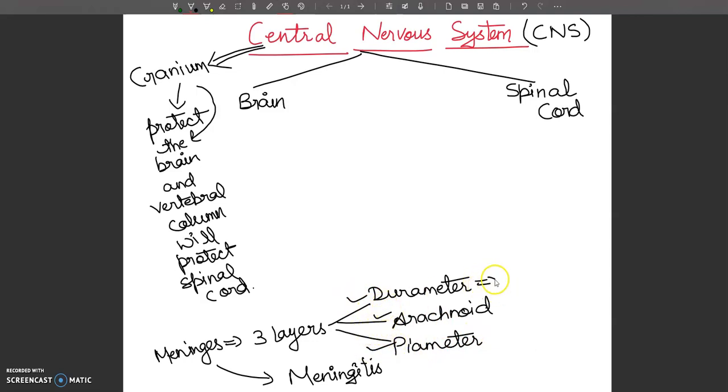Durameter is the outermost and tough layer. Arachnoid is the middle membrane. Piameter is the delicate and innermost layer.